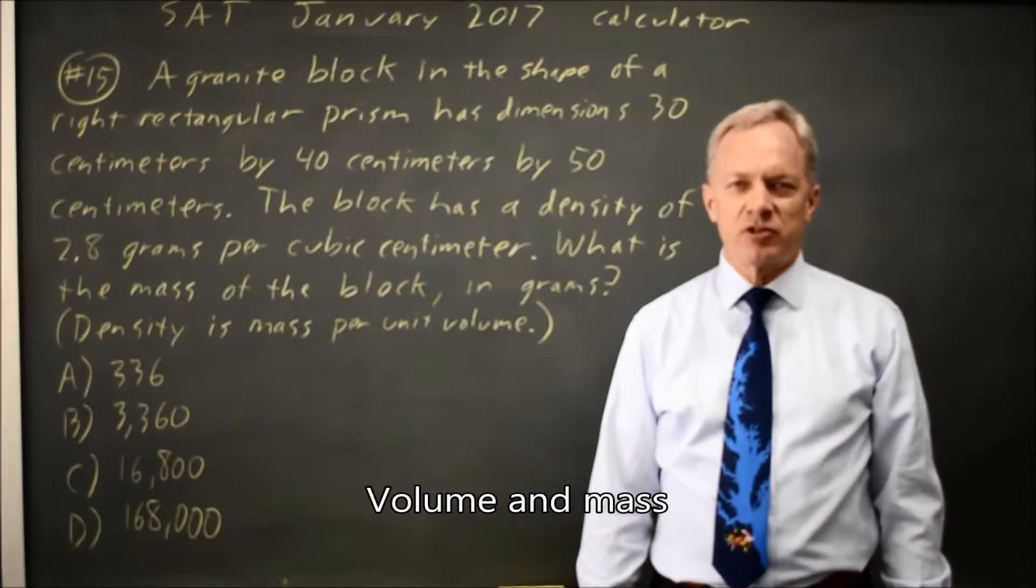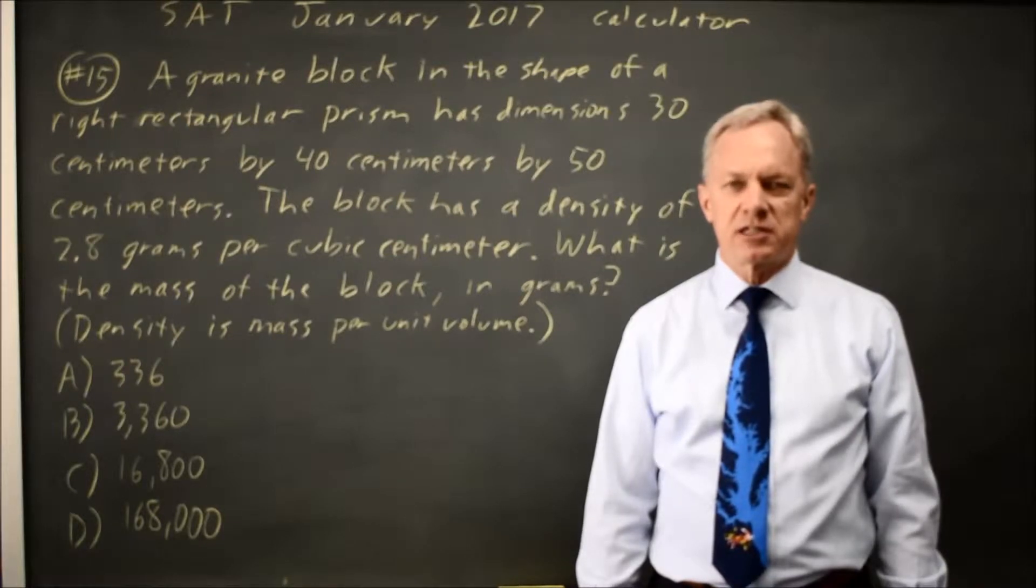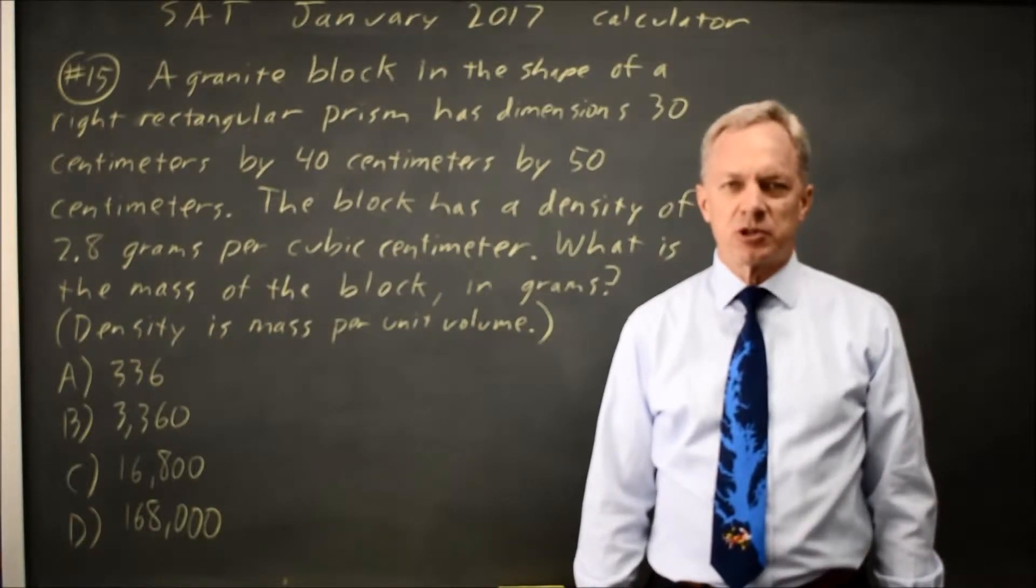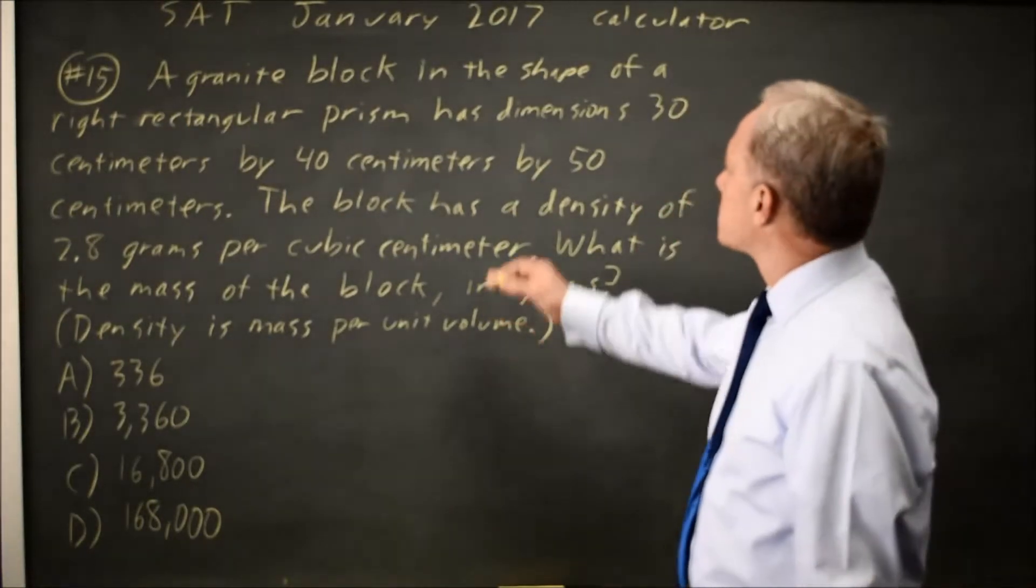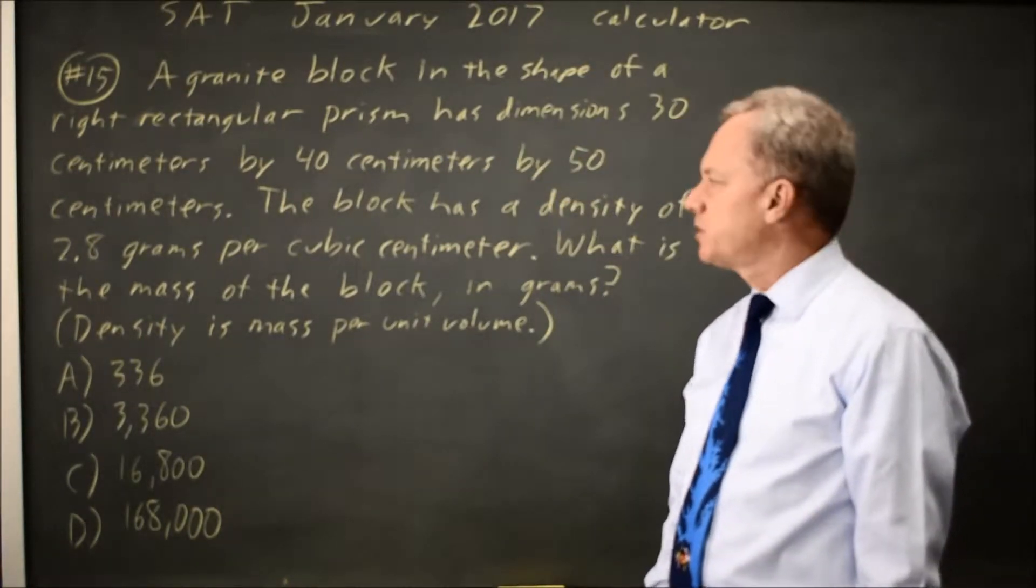This is Calculator Question Number 15 from the January 2017 SAT, which is Practice Test 8 in the 2018 version of the College Board Prep Book. The College Board gives us a granite block in the shape of a rectangular prism. They give us the dimensions and the density.